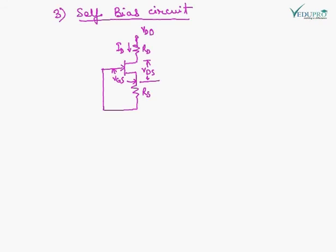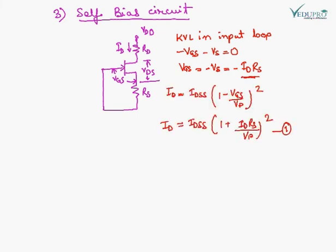This is the circuit for self-biasing. Applying KVL in the input loop, we can write VGS equals minus ID RS, which is the voltage drop in the source VS. Now we can calculate ID using this equation.